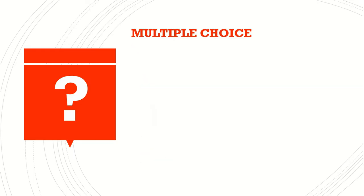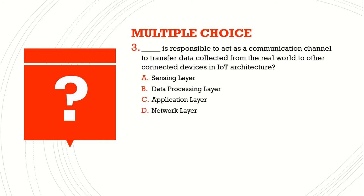Question number three: blank is responsible to act as a communication channel to transfer data collected from the real world to other connected devices in Internet of Things architecture. A) sensor layer, B) data processing layer, C) application layer, D) network layer. The answer is D) network layer.